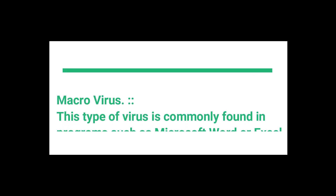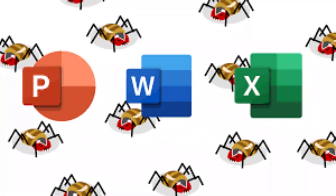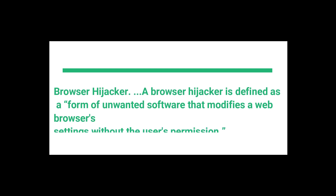The second type is the macro virus. This type of virus is commonly found in programs such as Microsoft Word or Excel. It attacks PowerPoint, Microsoft Word, and Microsoft Excel spreadsheets.